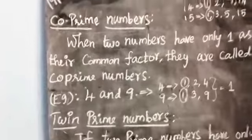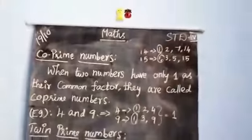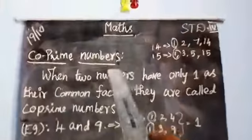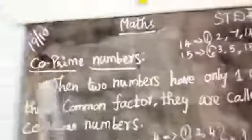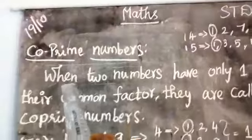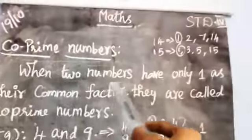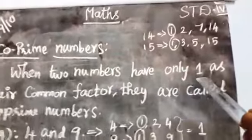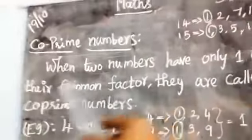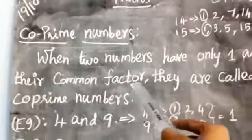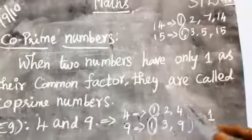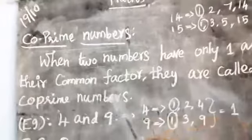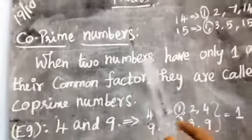Friends, today we are continuing this section on co-prime numbers. Co-prime numbers means when two numbers have only one as their common factor, they are called co-prime numbers.